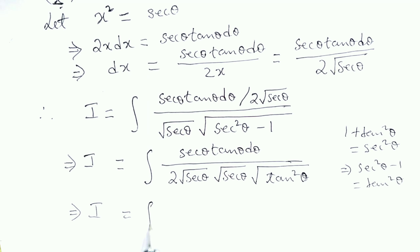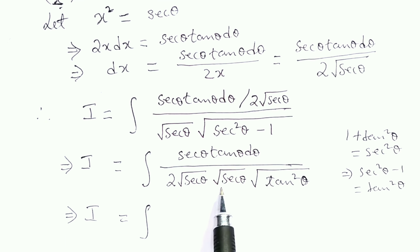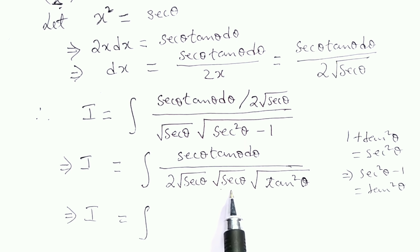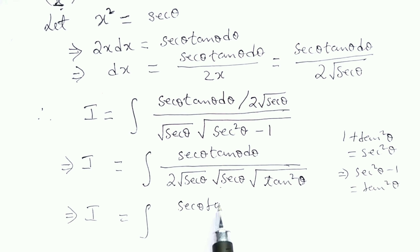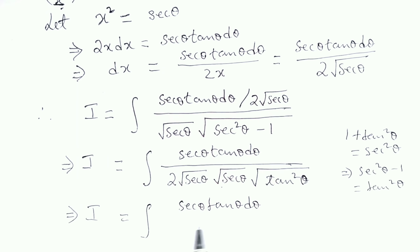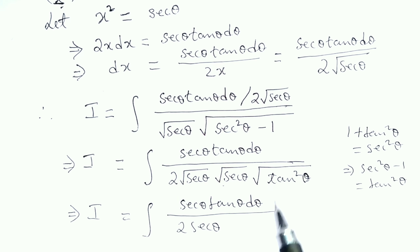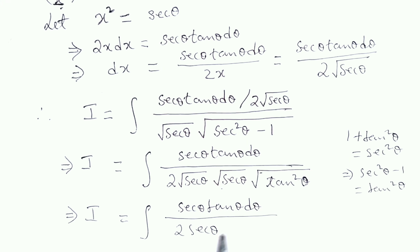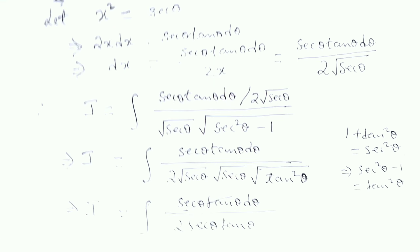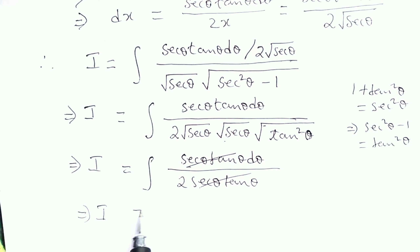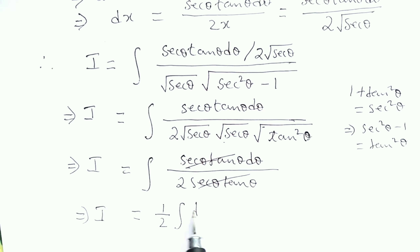So I is equal to the integration where √(sec θ) times √(sec θ) gives sec θ in the denominator. The sec θ cancels, and tan θ cancels with the square root of tan²θ. Therefore, we have I equal to one-half times the integration of dθ.